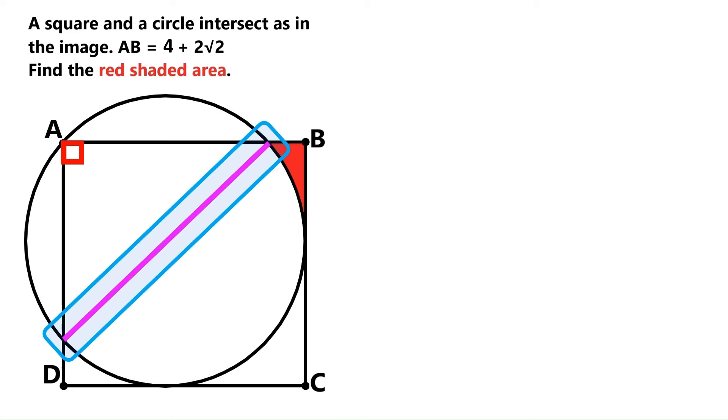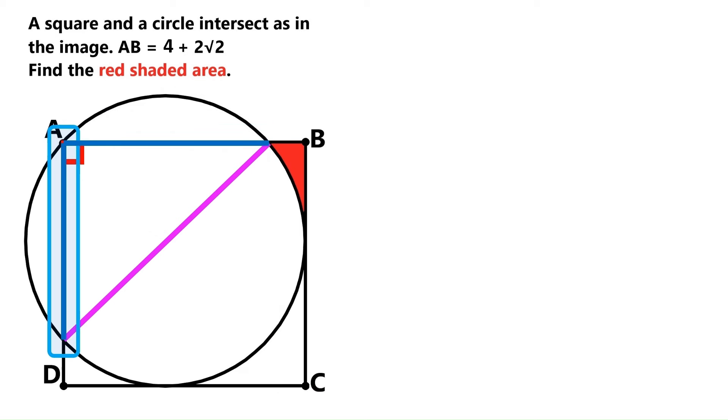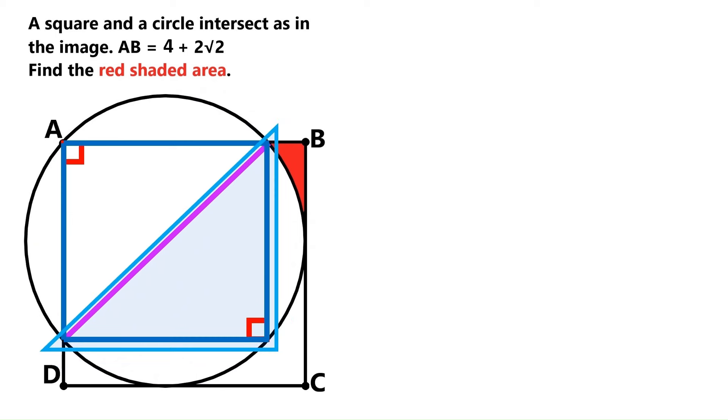This whole diagram is symmetric along this axis, so this length here is equal to this length here. And this diameter cuts the circle into two equal parts, making this part and this part symmetric as well. So, we can take this triangle here and project it onto this part. We've now got a square inscribed in the circle.